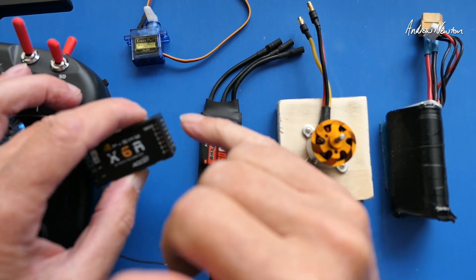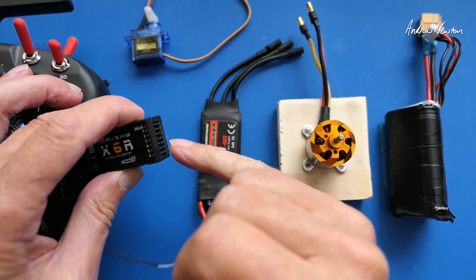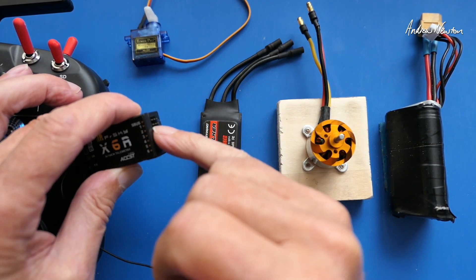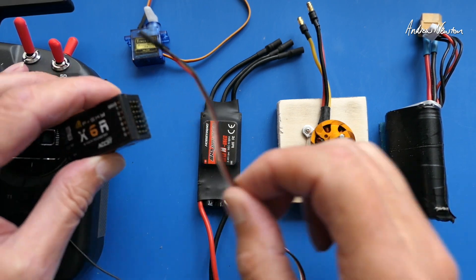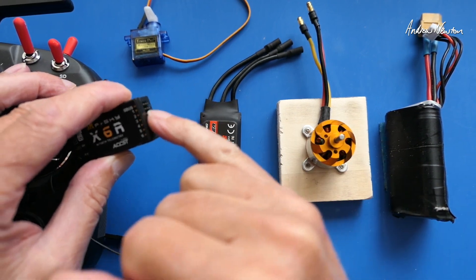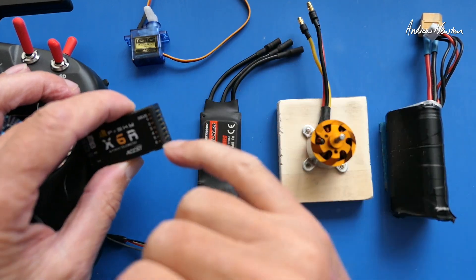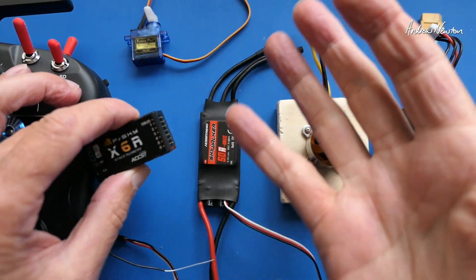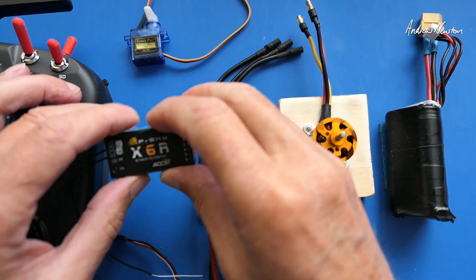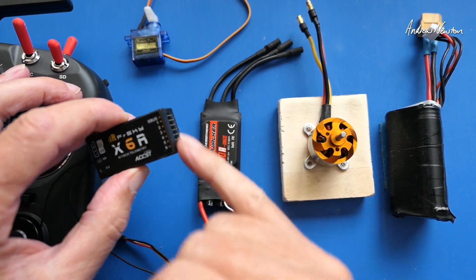This is SBUS so we can directly connect servos and motor controllers to each channel directly to the receiver or we can use the SBUS connector to connect to a flight control board. We'll start off with the PWM side of it anyway.